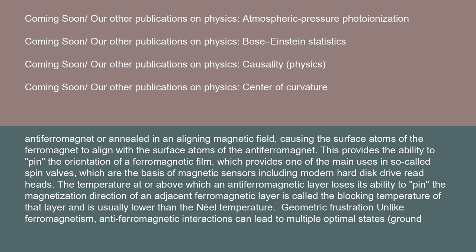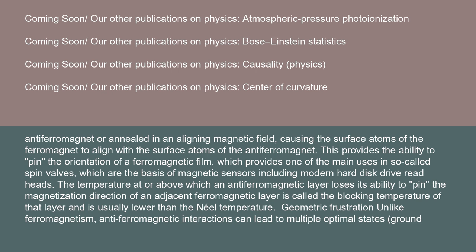Unlike ferromagnetism, antiferromagnetic interactions can lead to multiple optimal ground states of minimal energy. In one dimension, the antiferromagnetic ground state is an alternating series of spins: up, down, up, down, etc.